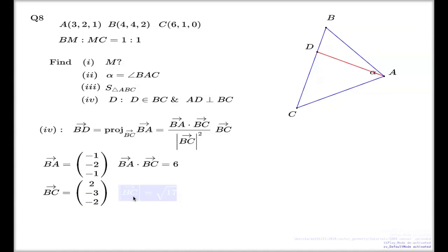Length of BC: 2 squared... sorry, 4, 9 and 4. It's 17, so the length of BC is root 17. In fact, we don't even need the root because in the formula of the projection, length always comes with a square, which means it will be just 17.